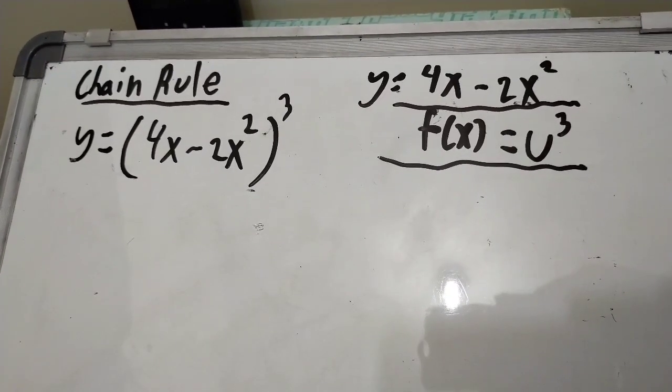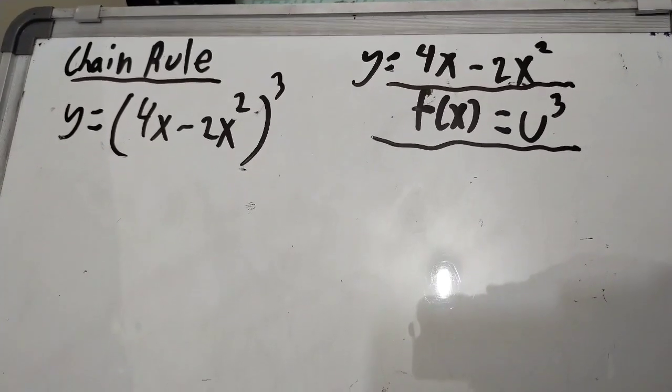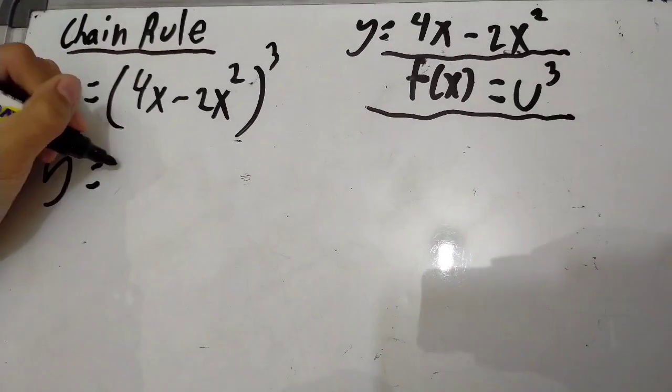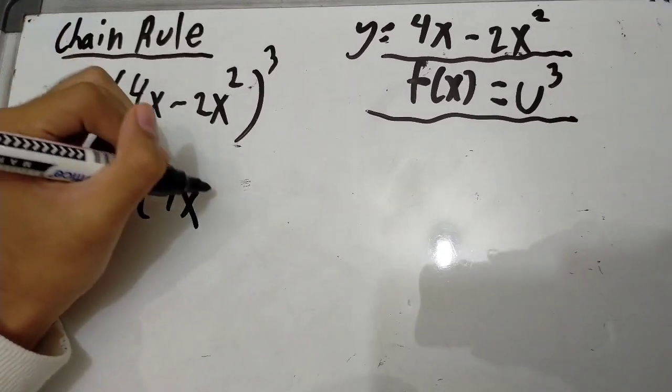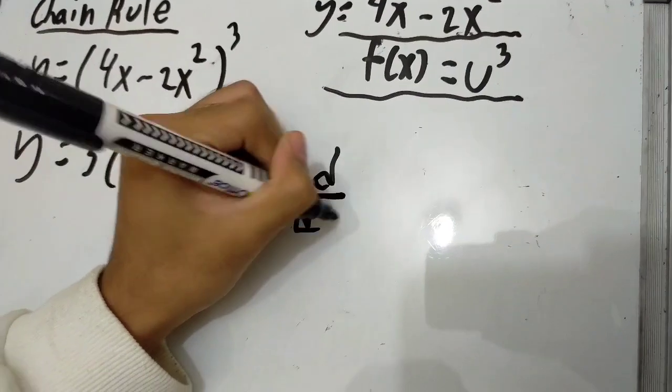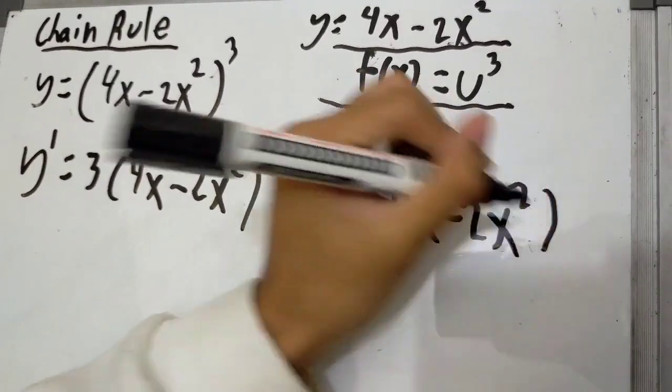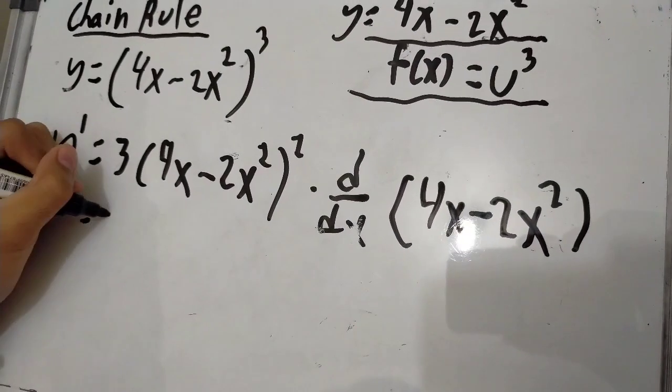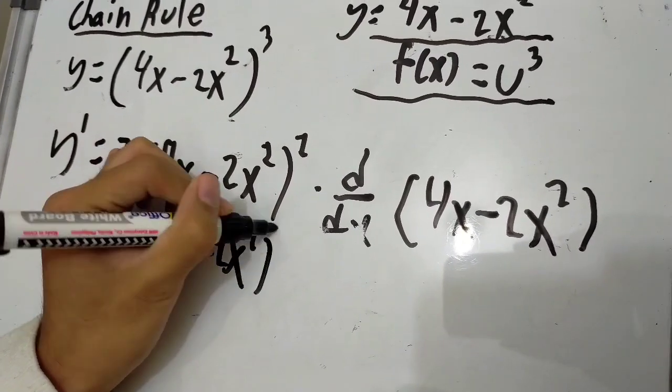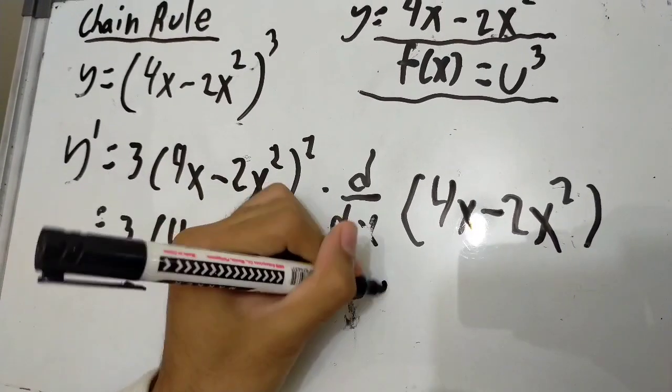The last rule that we are going to talk about is the chain rule. There are different equations that can be applied with chain rule, but let's go with a simpler one. So y equals (4x - 2x²)³. Then y' equals 3(4x - 2x²)² times d/dx of (4x - 2x²), which equals 3(4x - 2x²)² times (4 - 4x).